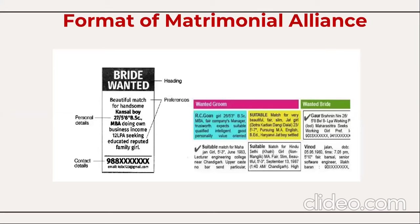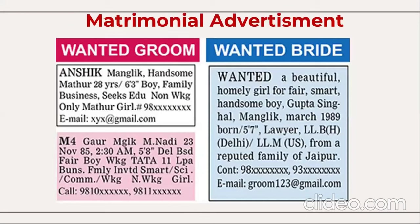For matrimonial classified advertisements, here is an example: 'Bride Wanted — beautiful match for a handsome boy, height [given], qualification BSc and MBA, doing own business, income 12 lakh per annum, seeking educated girl from a reputed family — contact number or email ID.' Other examples include 'Wanted Groom' and 'Wanted Bride' ads, mentioning details like Manglik status, date of birth, family background, and location. These samples are for educational purposes to understand how to write matrimonial advertisements.